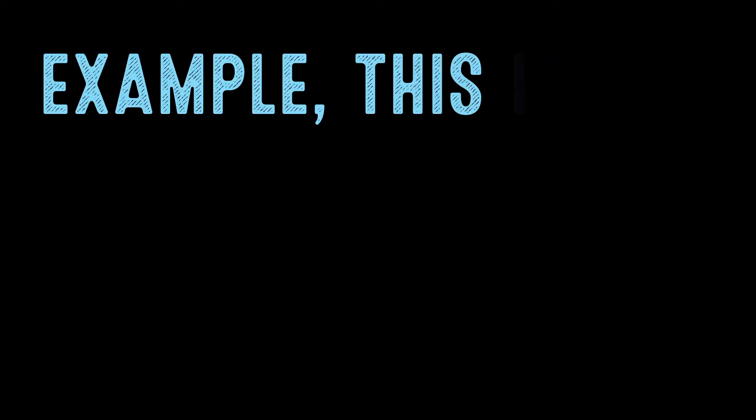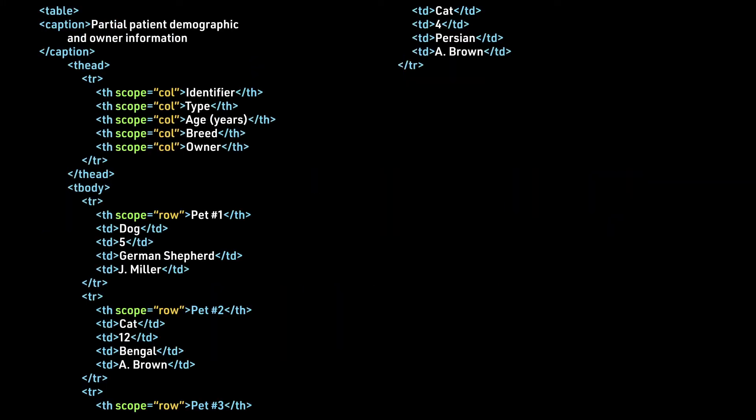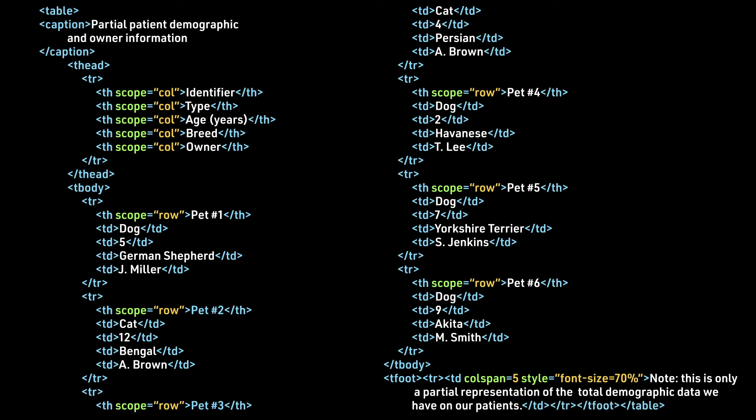Going back to our previous example, this is how we can improve its accessibility. With this new code, we have added a caption that explains that this table is partial patient demographic and owner information. We have also added scope attributes to all the heading elements, specifying whether each is a column heading element or a row heading element.